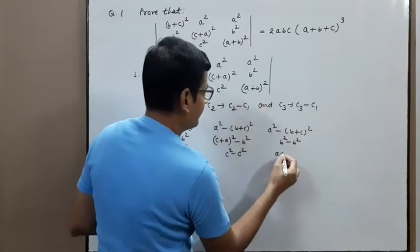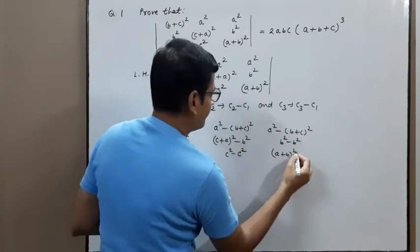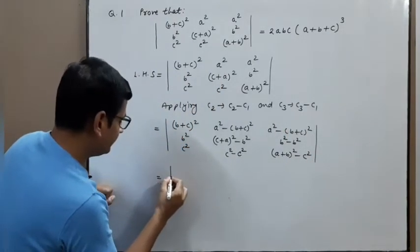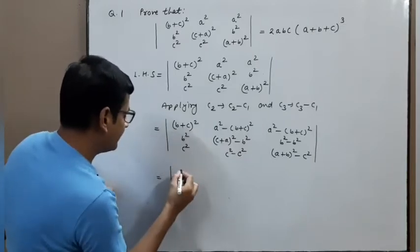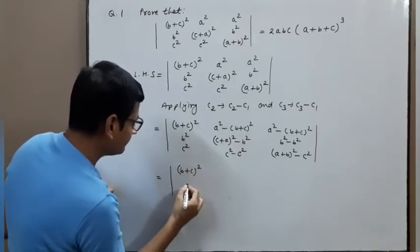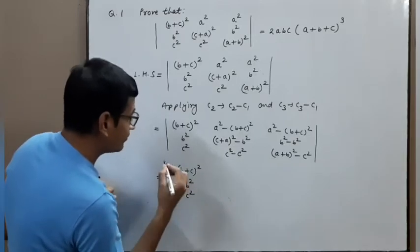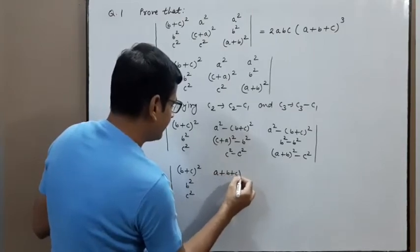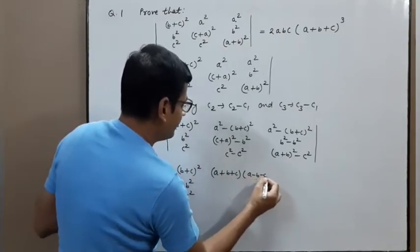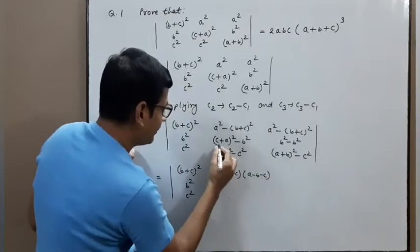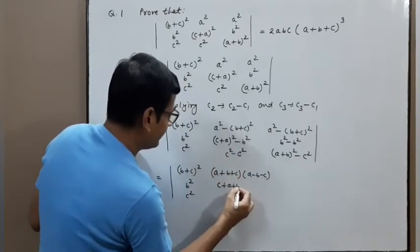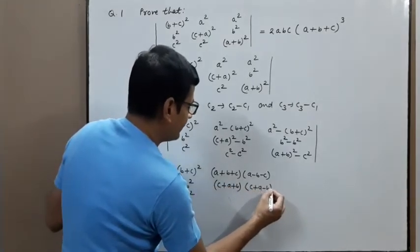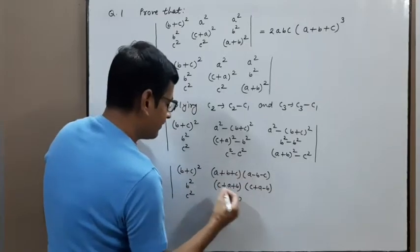This minus this gives zero. So (a+b)² minus c² factors as (a+b+c)(a+b−c). Now simplify: (b+c)², b², c² in the first row. Factor of the C2 entry: (a+b+c)(a−b−c). Factor of the C3 entry: (a+b+c)(c+a−b). And c² minus c² equals zero.